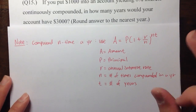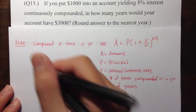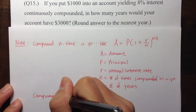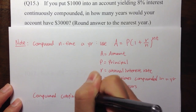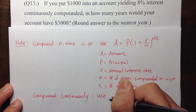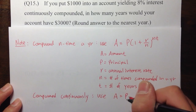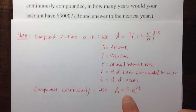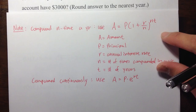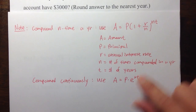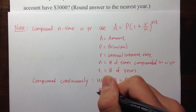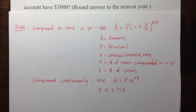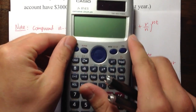There is another similar formula we use when the question says the account is compounded continuously. In that situation, we use: A equals P times e raised to the r times t power. The P, R, and T are the same as in the previous equation.